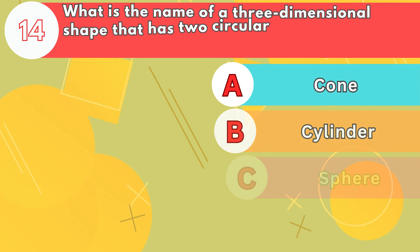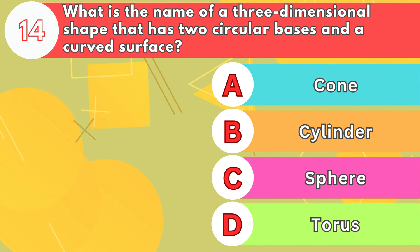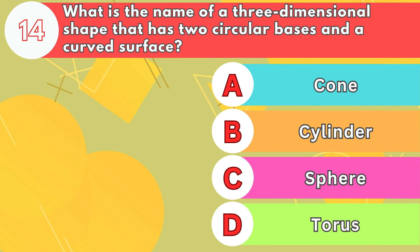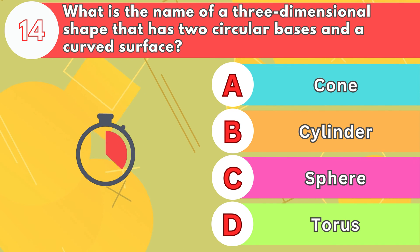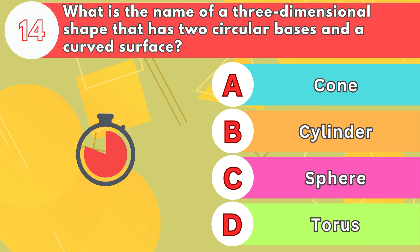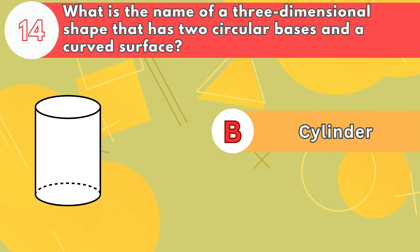Number 14. What is the name of a three-dimensional shape that has two circular bases and a curved surface? The answer is letter B, cylinder.